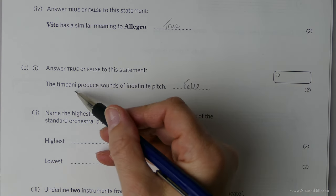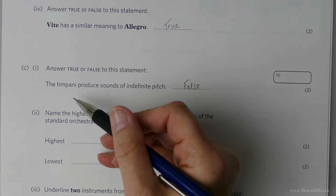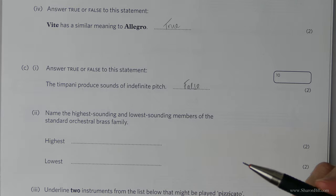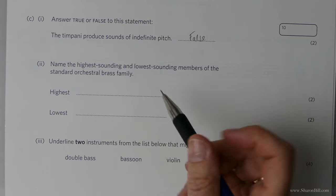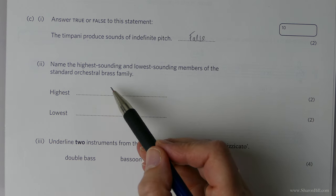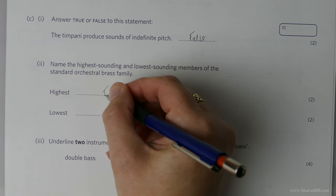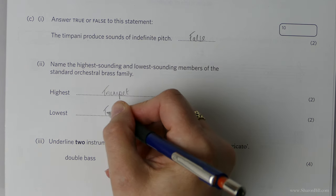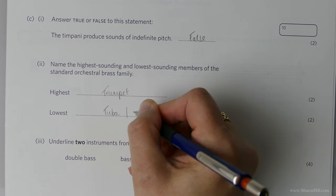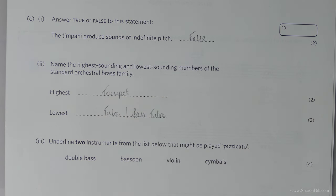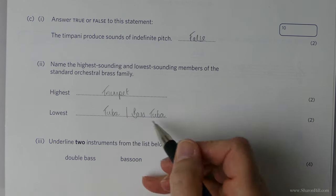Now we're asked to name the highest sounding and the lowest sounding members of the standard orchestral brass family. The highest is the trumpet and the lowest is the tuba or I guess you could also say bass tuba. That isn't always present but that's acceptable as an answer.